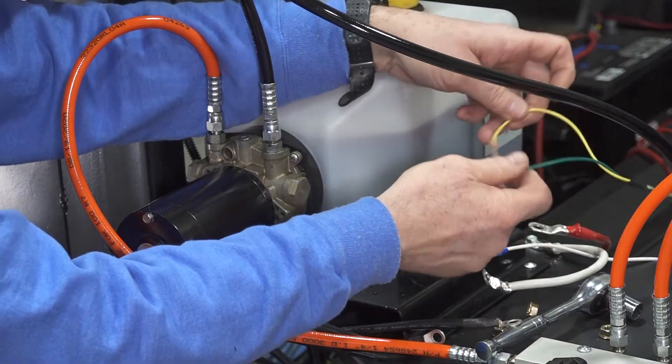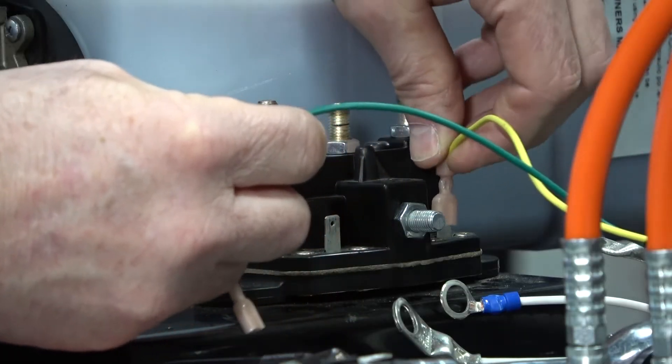Then, install the green extend wire and the yellow retract wire onto the spade terminals.